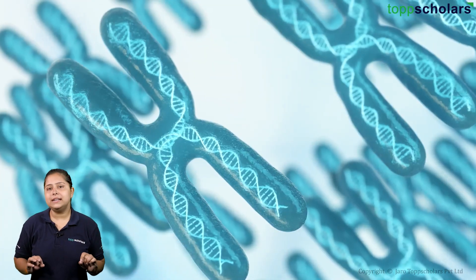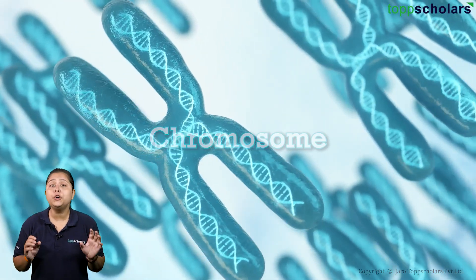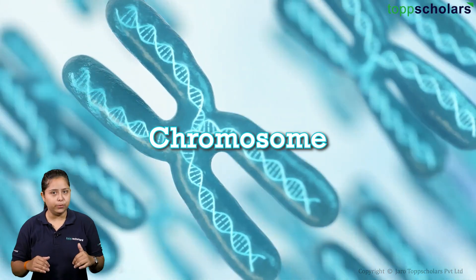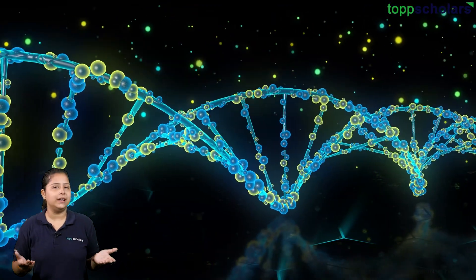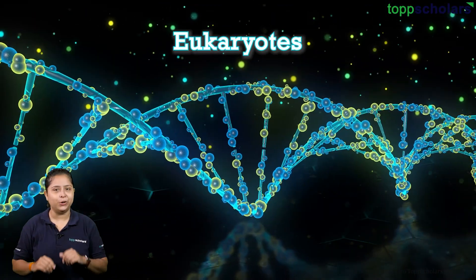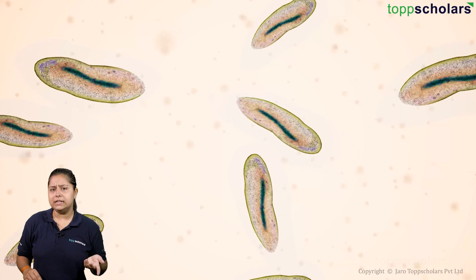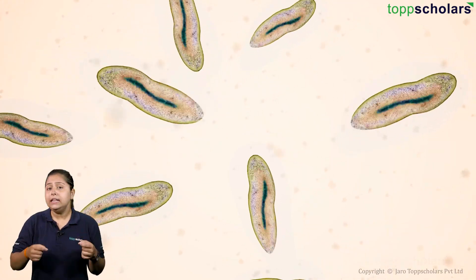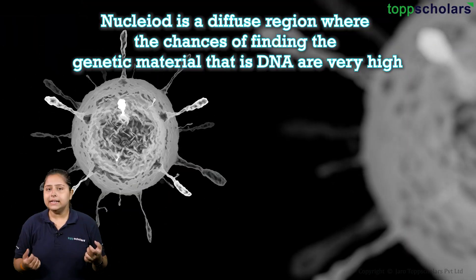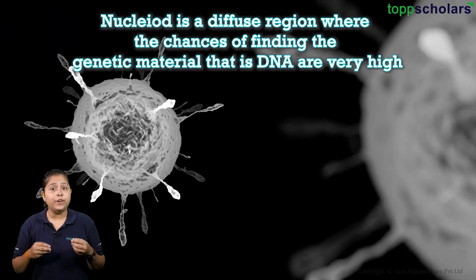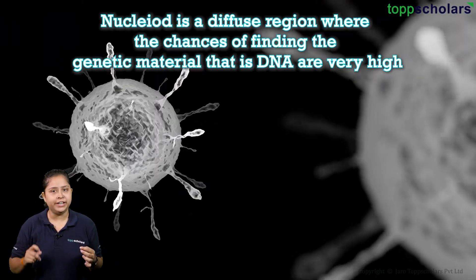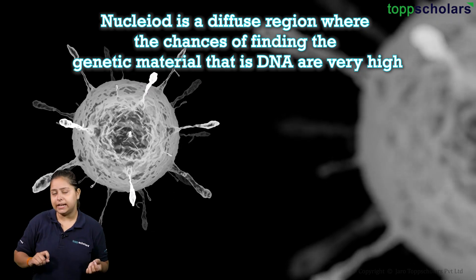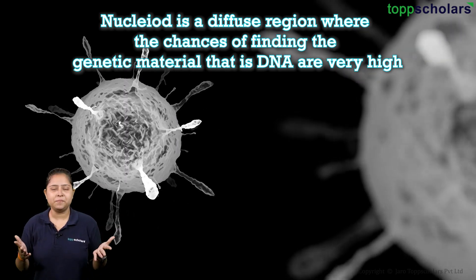Now, where is this blueprint found? DNA is present in a more condensed form called chromosomes inside the nucleus in advanced organisms called eukaryotes. While simple organisms like bacteria have their DNA in the nucleoid — a diffuse region where the chances of finding the genetic material, that is DNA, are very high.